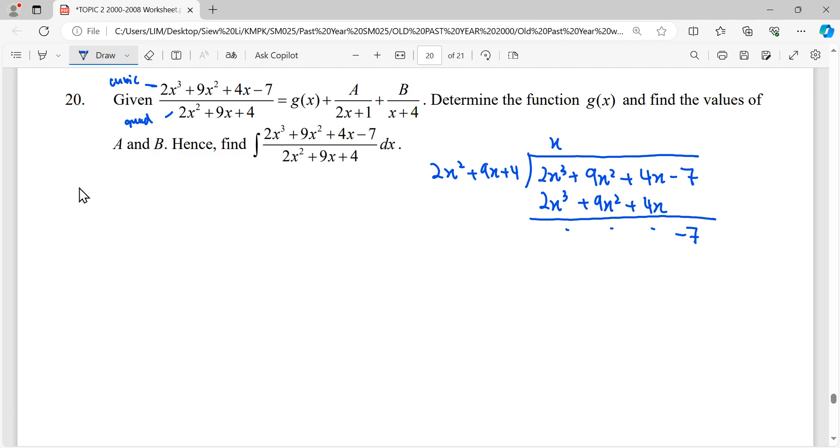Which means that this long division gives us quotient is x, remainder is negative 7 over the divisor here.